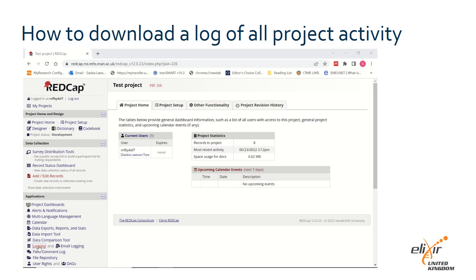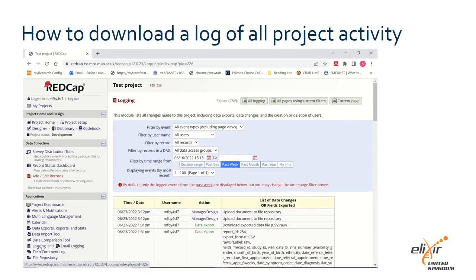Open your project and select Logging from the left hand side under Applications. This is a record of every action by every user in your project, which are all marked with a date and time, a specific username of someone who has access to your project unless you have enabled anonymous data collection, and details of the changes made and or data exported. At the top right hand side of the page click Export Logging to export the entire list of actions.